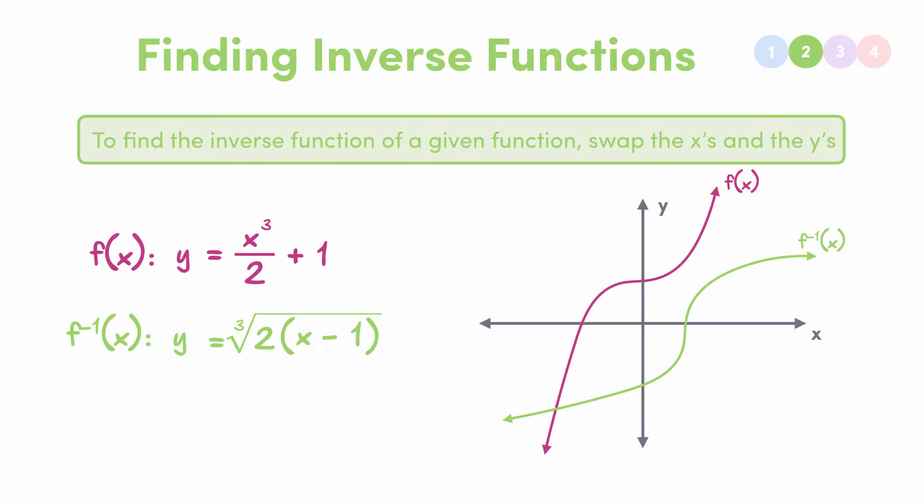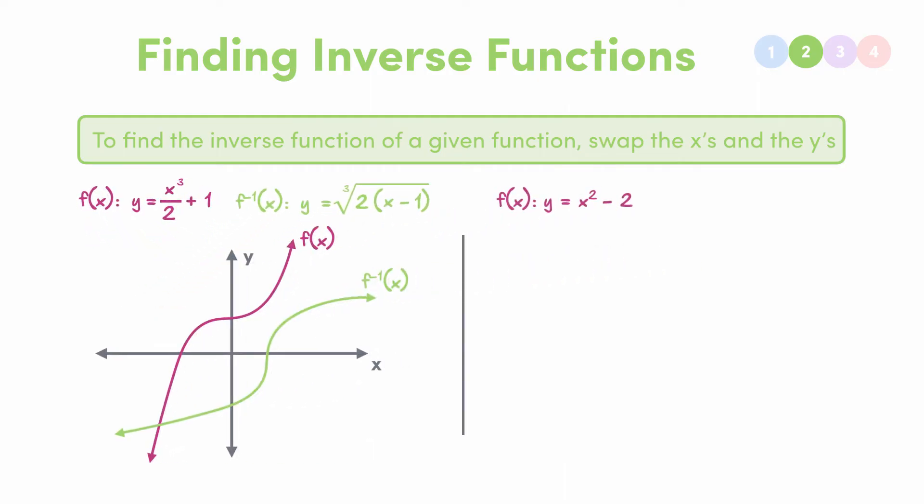Similarly, let's say we had the function y equal to x squared minus 2. Then to invert, firstly swap the x and the y, giving us x equal to y squared minus 2. And now we solve for y. Y squared is equal to x plus 2, so that means y is equal to plus or minus the square root of x plus 2. So again, on our graph, this is our inverse function.